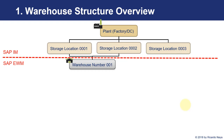As we see, we can link one store location or more than one. In this case, the other store location can be linked to another warehouse number. Even store locations of different plants can be linked to the same warehouse numbers so they are managed in the same database.